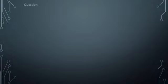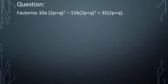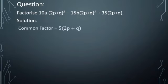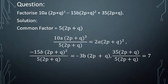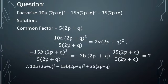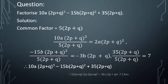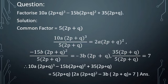Factorize 10a(2p + q)³ − 15b(2p + q)² + 35(2p + q). Here the common factor is 5(2p + q). Dividing the first term gives 2a(2p + q)², the second term gives −3b(2p + q), and the third term gives 7. So the factorization is 5(2p + q)[2a(2p + q)² − 3b(2p + q) + 7].